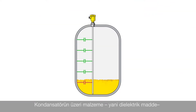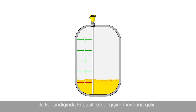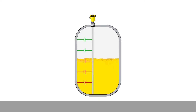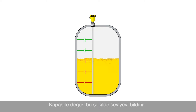When the capacitor is filled with a medium — the so-called dielectric — the capacitance is changing. This capacitance change is continuously measured by the integrated electronics. The larger the capacitance, the higher the level, and vice versa. And so the capacitance value can be assigned to the corresponding level.